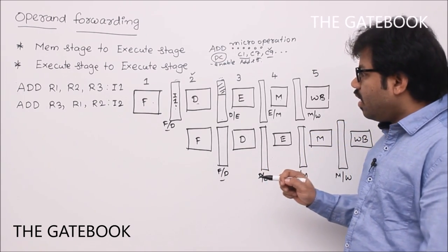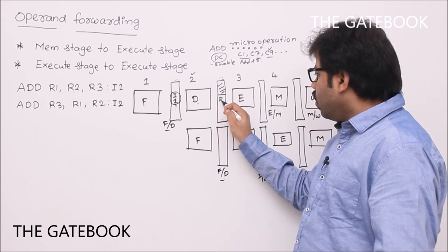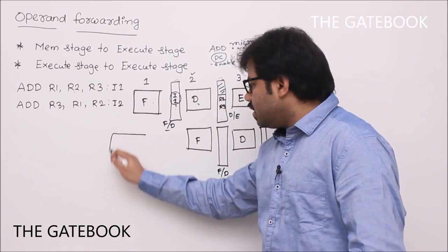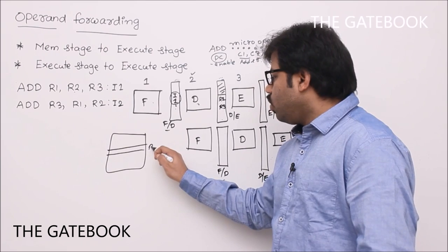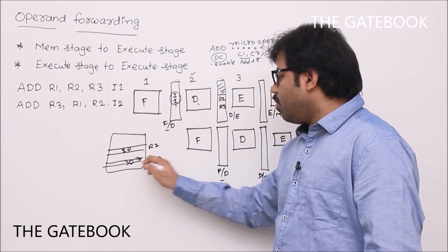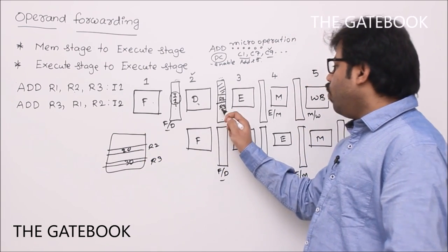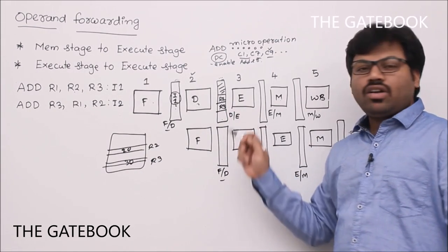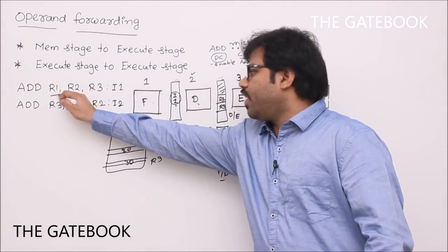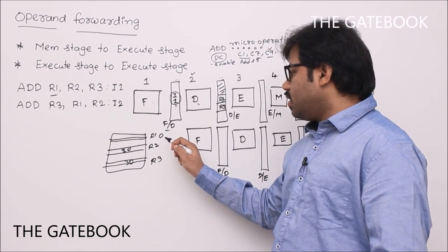Apart from control signals, the essential data is also prepared. The instruction references R2 and R3, so the contents of R2 and R3 are read from the register file — say 20 and 30. These values are placed into the decode-execute buffer. Also, the identifier (address) of the destination register R1, say 'xyz', is stored in the buffer.